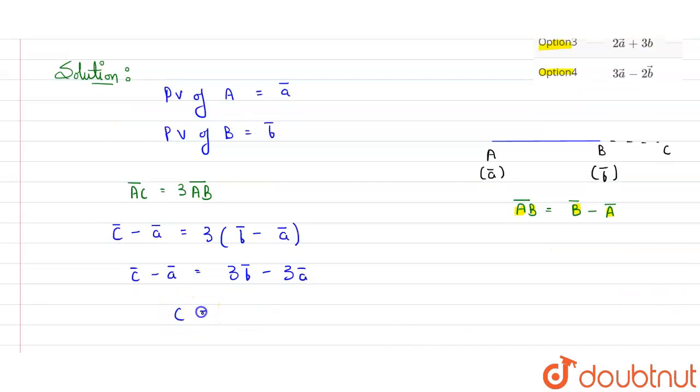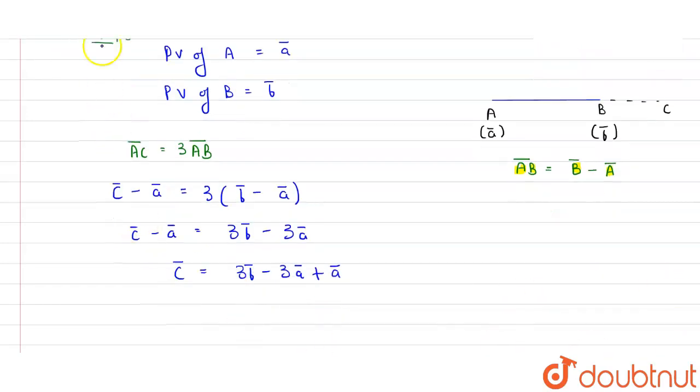I have shifted A to this side. So from here, C vector's value will be equal to 3B vector minus 2A vector.